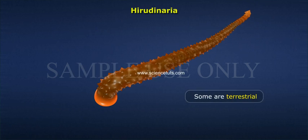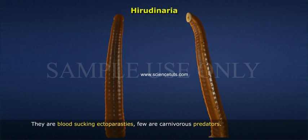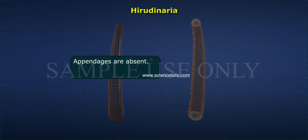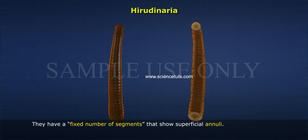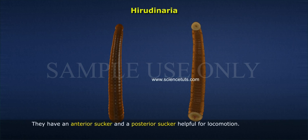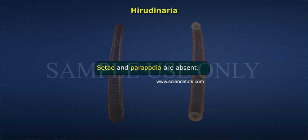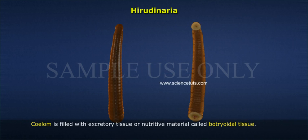Some leeches are terrestrial. They are blood-sucking ectoparasites; a few are carnivorous predators. Appendages are absent but ocelli are present. They have a fixed number of segments that show superficial annuli. The clitellum is conspicuous only during reproductive periods. They have an anterior sucker and a posterior sucker, which are helpful for locomotion. Setae and parapodia are absent.